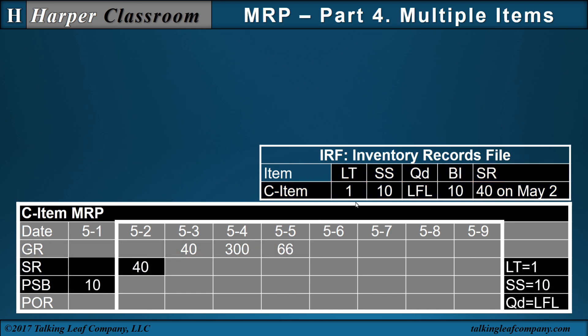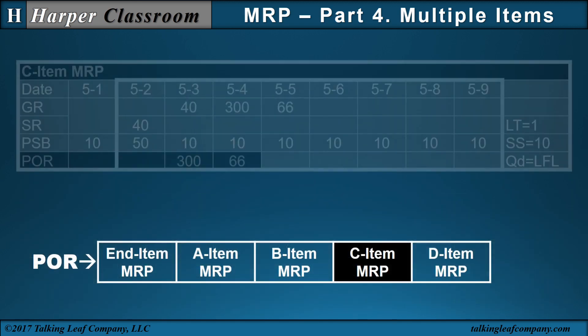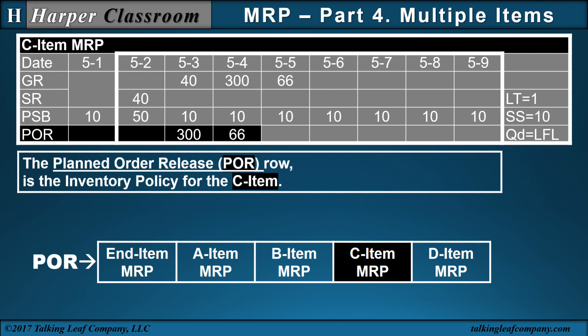We copy the lead time, safety stock, and lot size discipline from the Inventory Records File, along with the beginning inventory and scheduled receipts. The projected stock balance and planned order release rows are then completed following the instructions from Parts 1, 2, and 3. The planned order release row of the C item MRP is the inventory policy for the C item.